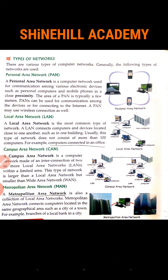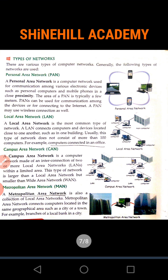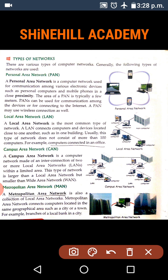Next one: Local Area Network. A local area network is the most common type of network. A LAN connects computers and devices located close to one another, such as in one building. Usually this type of network does not consist of more than 100 computers. For example, computers are connected in an office. LAN network is the most common type of network.